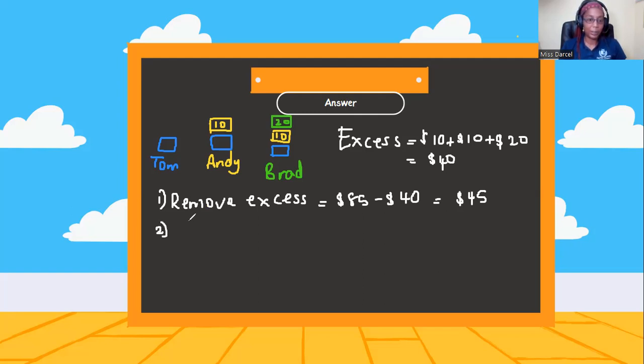So we're going to split this $45 three-way. So the next step, we divide. So there are three people, so we divide by three. And we get $15. So this $15 represents the base or the minimum. So everybody gets a minimum or base amount of $15.